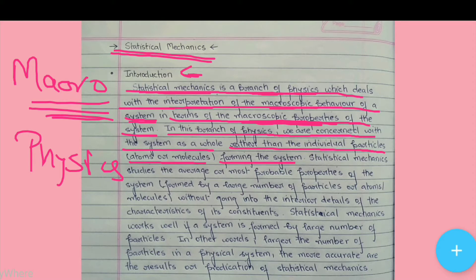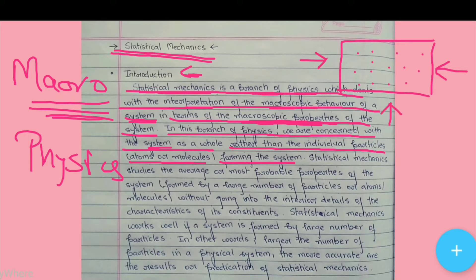What happens in this branch of physics? We consider the whole system. We know that there is a system where there are a lot of constituent particles. When we study the constituent particles, it is microscopic. When we study the whole system, it is macroscopic. So we learn about the whole system instead of individual particles, atoms or molecules which form the system.